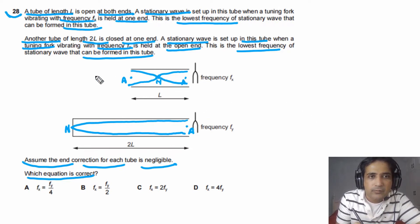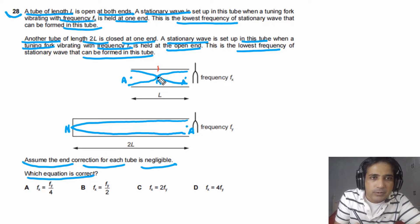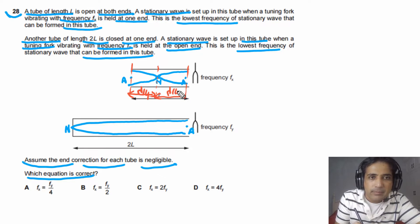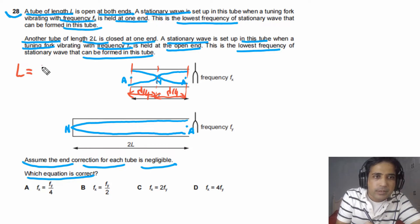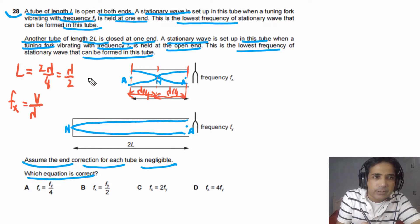Now we find lambda for each tube. The distance between a node and a consecutive antinode equals lambda/4. For the open-open tube, the length L spans two such sections: L = 2 × (lambda/4) = lambda/2, so lambda = 2L. Therefore FX = V/lambda = V/(2L).